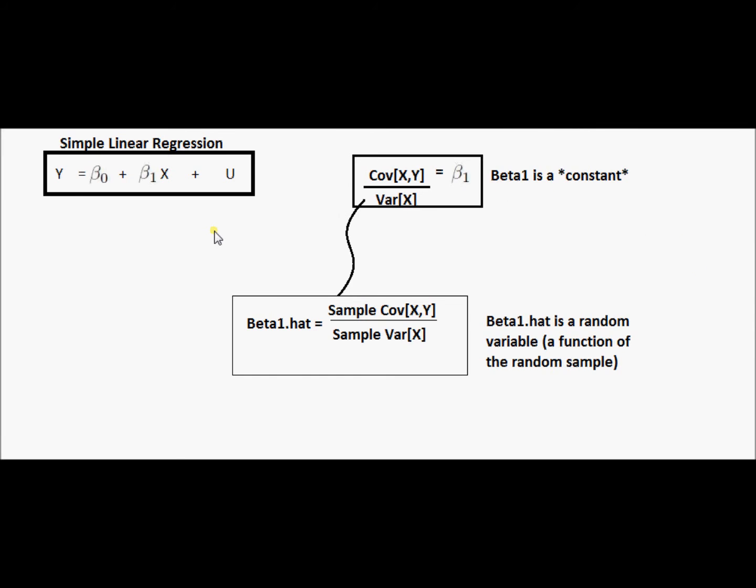Hopefully this discussion of simple linear regression, sort of taking the population first approach, describing what beta one is in terms of the joint distribution of this random vector that we're thinking about. Hopefully that gives you a different perspective on simple linear regression. Thank you very much.